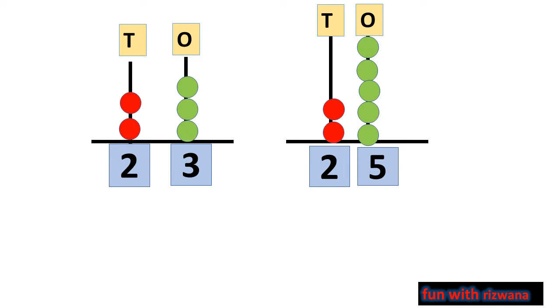So, when we compare number 23 with number 25, here we must have to compare the tens first. In both numbers, we have 2 tens. It means tens are same. But the difference is in ones because 23 has 3 ones and 25 has 5 ones.